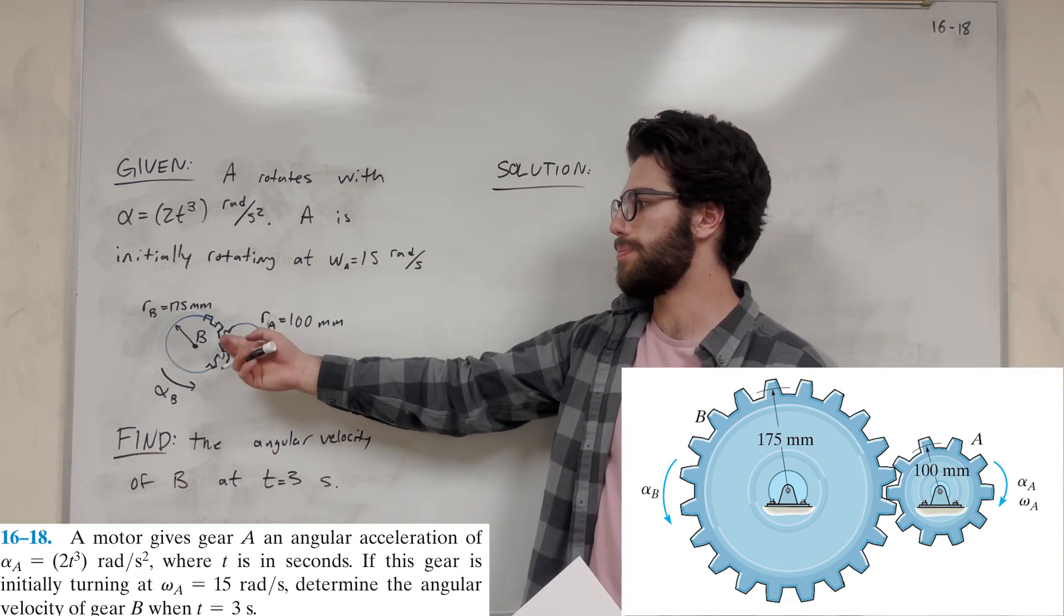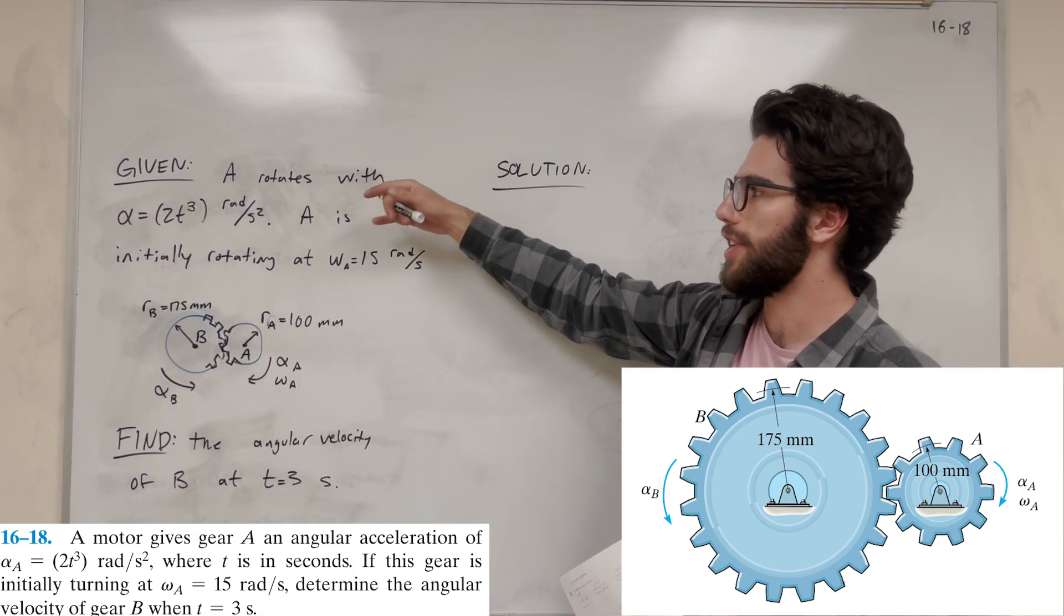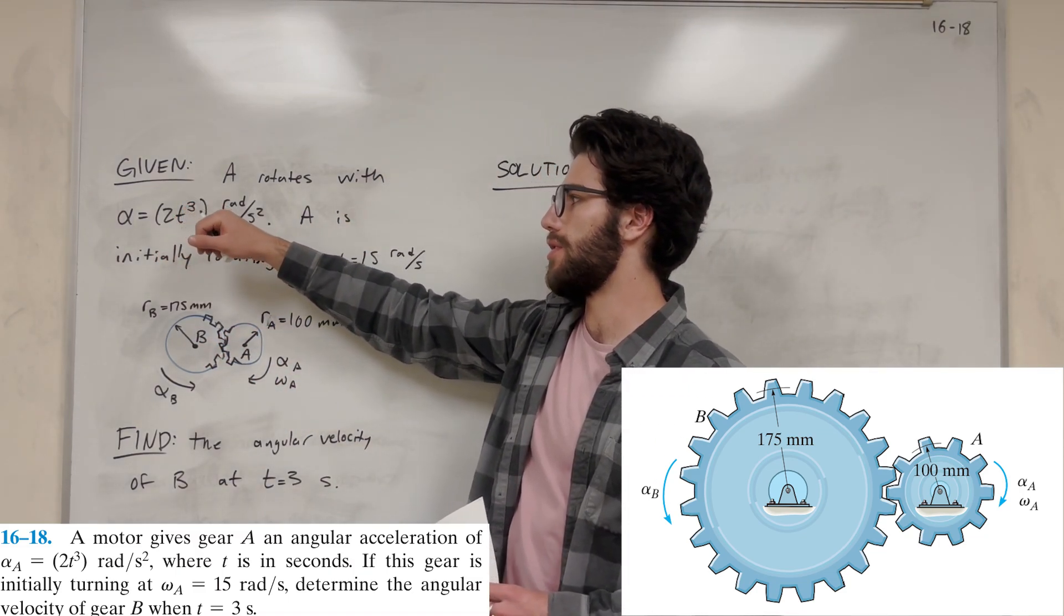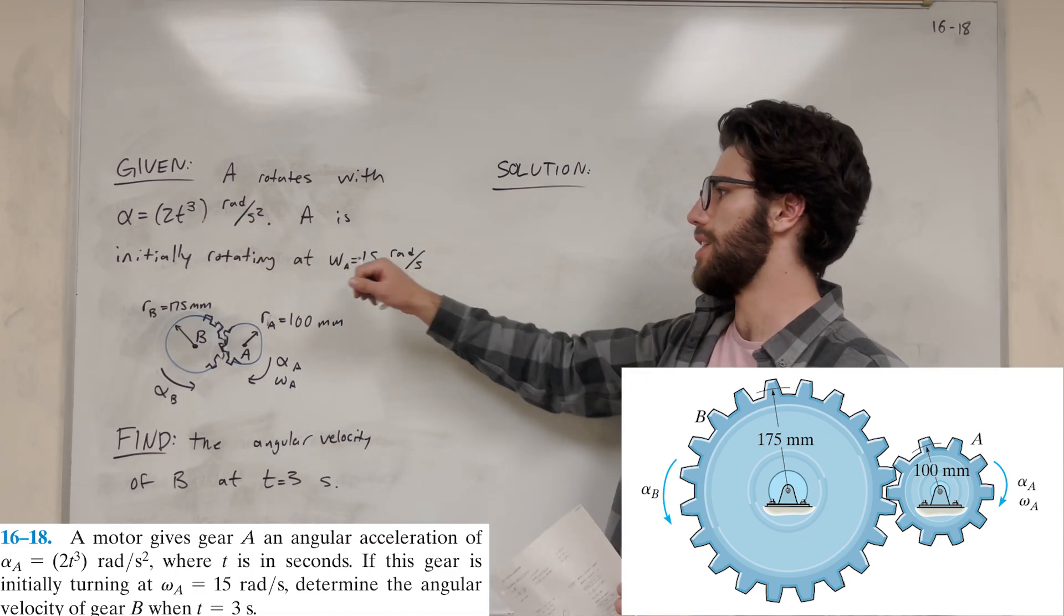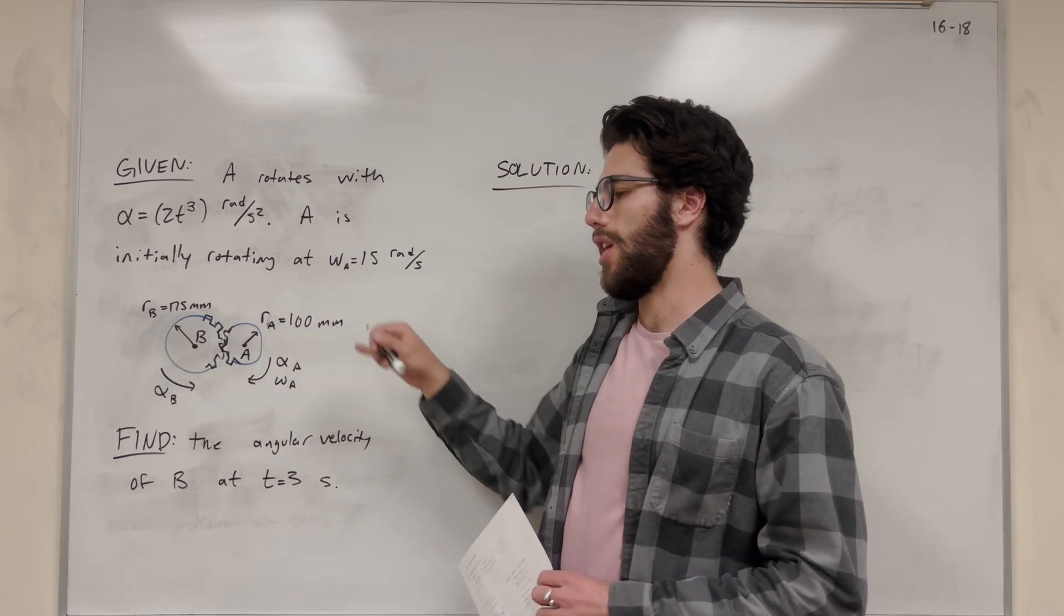So we're given these two gears, gear A and gear B. We're given that A rotates with an angular acceleration of 2t³ rad/s². And it also has an initial angular velocity of 15 rad/s, going both of them clockwise.